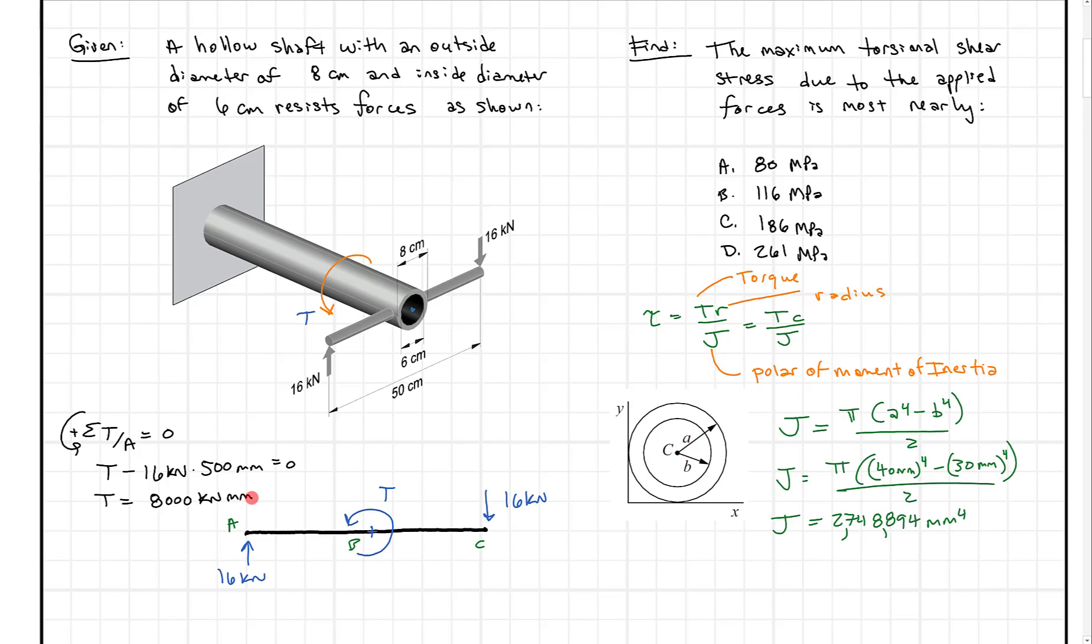So now the cool thing is all we really have to do is come back and substitute in to find our torsional shear stress. So let's do that. Let's say tau equals what? Well, T, which is 8,000. And actually, what I'm going to write here is I'm going to multiply by another 1,000 to get 8 million newton millimeters. Then I'm going to multiply by the radius. The radius that we care about here is going to be from the center of this thing to the outside. That's going to be our 40 millimeters.